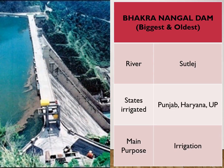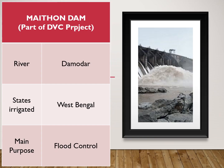Some of the dams built in India: the Bhakra Nangal Dam is the biggest and oldest dam of India, built immediately after independence on the Satlaj river. The states which benefit from irrigation from this dam are Punjab, Haryana, and western Uttar Pradesh. The main purpose of setting up this dam was irrigation of nearby areas. The Methon Dam is part of the Damodar Valley Corporation project.